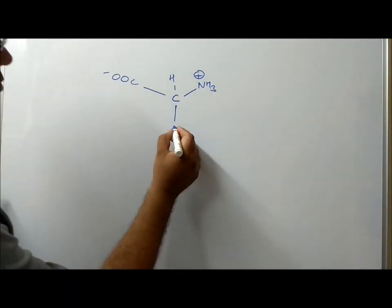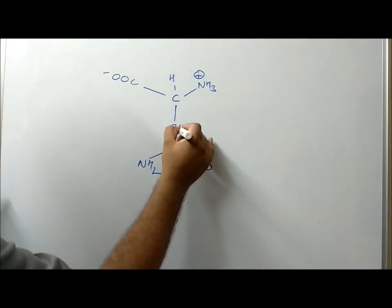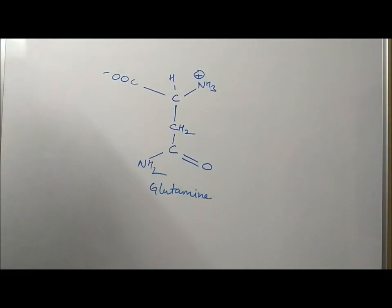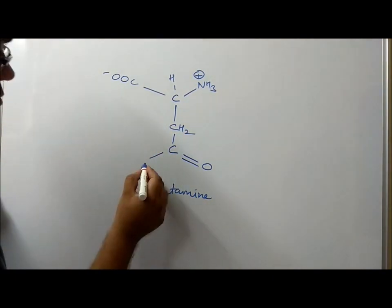In the same continuation, if I increase one more methyl group and make a similar structure, this becomes glutamine. And if I remove the amine with a hydroxyl group, then I get the structure of glutamic acid.